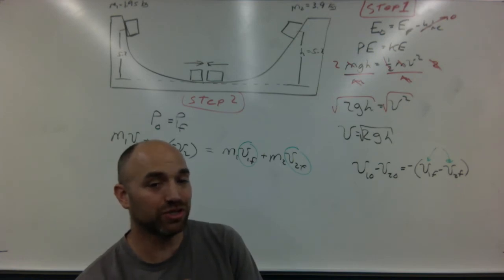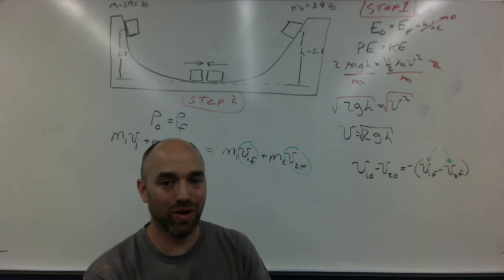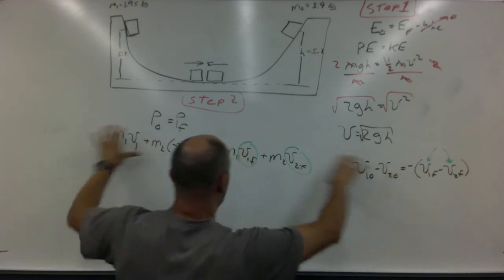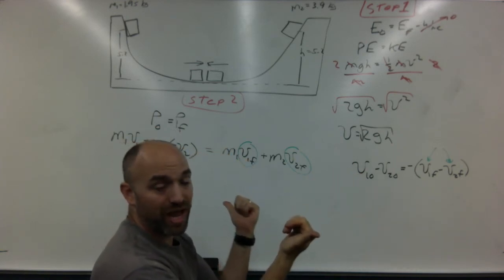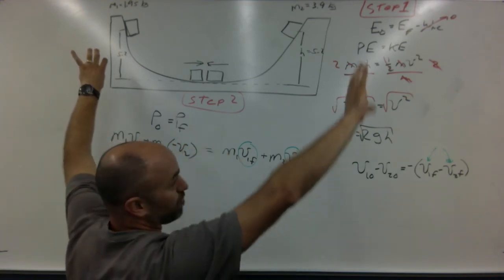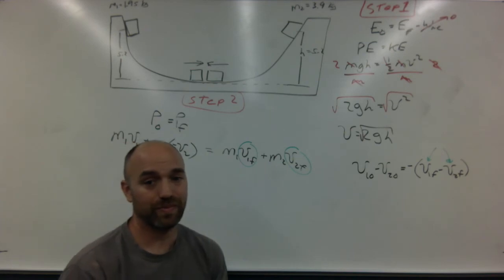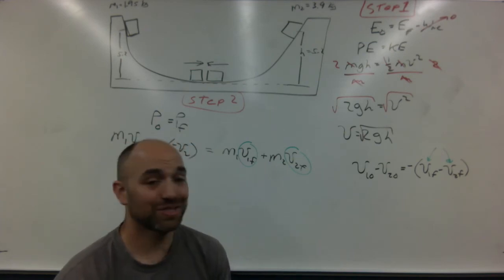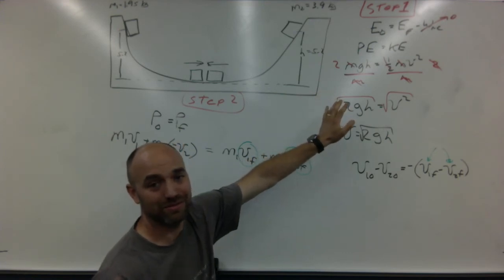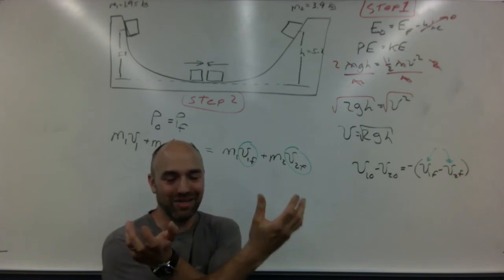We've got this problem set up. Let me show you step three. Part C asks how high each mass goes after the collision. Once these two equations give us the final velocities after the collision, the masses go back up the ramps. Step three is exactly the reverse of step one: instead of starting with potential energy and ending with kinetic, you start with kinetic and end with potential energy.